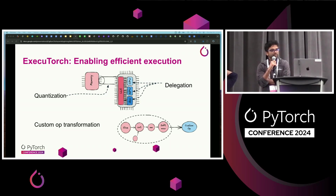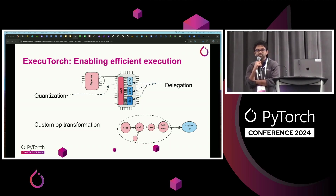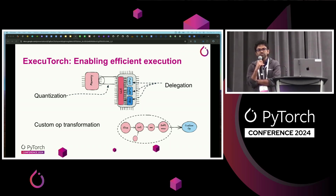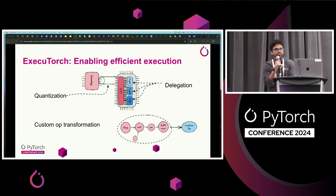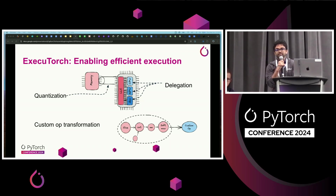So how does ExecuTorch enable efficient execution? It enables this through different parts of the stack. Quantization, for example, addresses the memory bandwidth constraint, where we can reduce the model size and reduce pressure on the bandwidth. For compute, we leverage delegation, where we can delegate parts of the model or the entire model to different accelerators. And using custom op transformation, users can take specific parts of the model and apply operator fusions to generate custom operators that can run more efficiently, which may not be supported by accelerators.